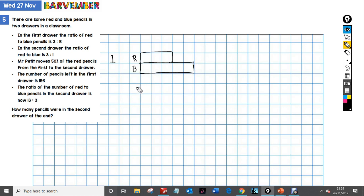And then let's do the second drawer. The second drawer red to blue. What have we got in the second drawer? The ratio of red to blue is 3 to 1. Right, there we go. So that's the two situations to begin with. We've done this, we've done this.